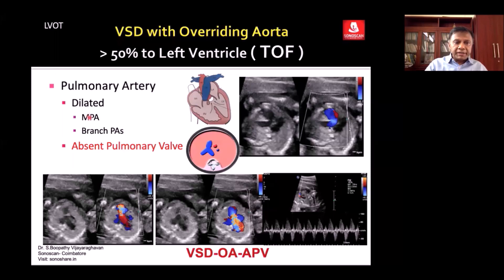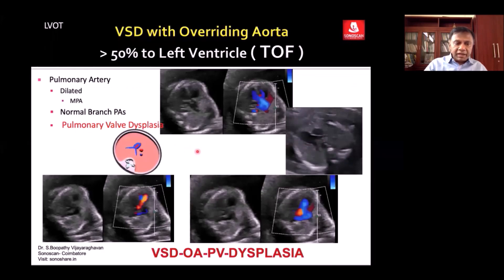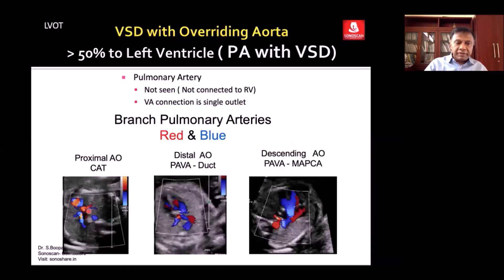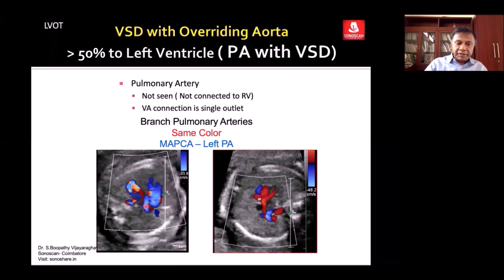We come to dilated pulmonary artery, where the main pulmonary artery and branch pulmonary arteries are grossly dilated. This occurs when there is pulmonary regurgitation — pulmonary valve, right ventricle. The ventricular-arterial connection is single, so here you see only a single vessel in the 3VT. In this situation you must look for the branch pulmonary arteries. When the pulmonary arteries are arising from the proximal aorta, it is common arterial trunk, and both branch pulmonary arteries are away from the transducer, so both are in blue.